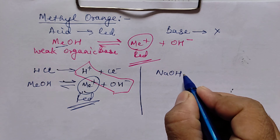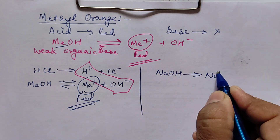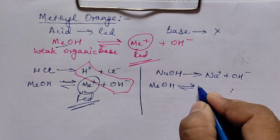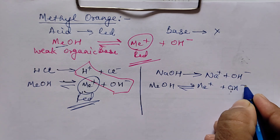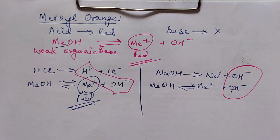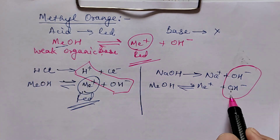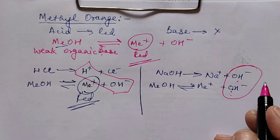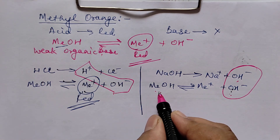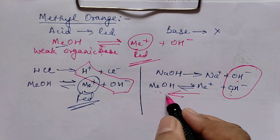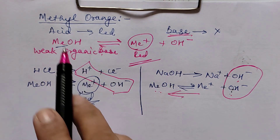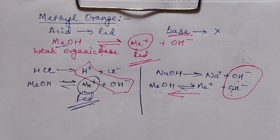In base, NaOH ionizes into Na⁺ and OH⁻. Methyl orange (MeOH) also produces OH⁻ upon ionization. Both NaOH and MeOH give the common ion OH⁻. Due to this common ion, the ionization of methyl orange is suppressed, so it remains in the molecular MeOH form — the normal orange color. That is why no color change is observed when methyl orange is added to base, whereas it gives a red color in acid.